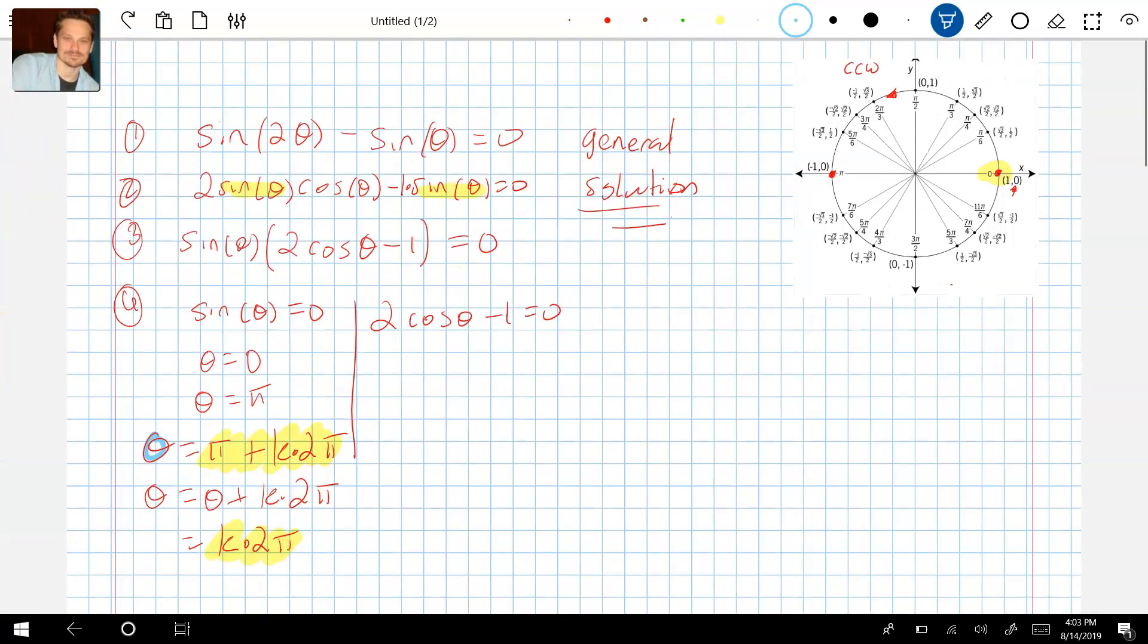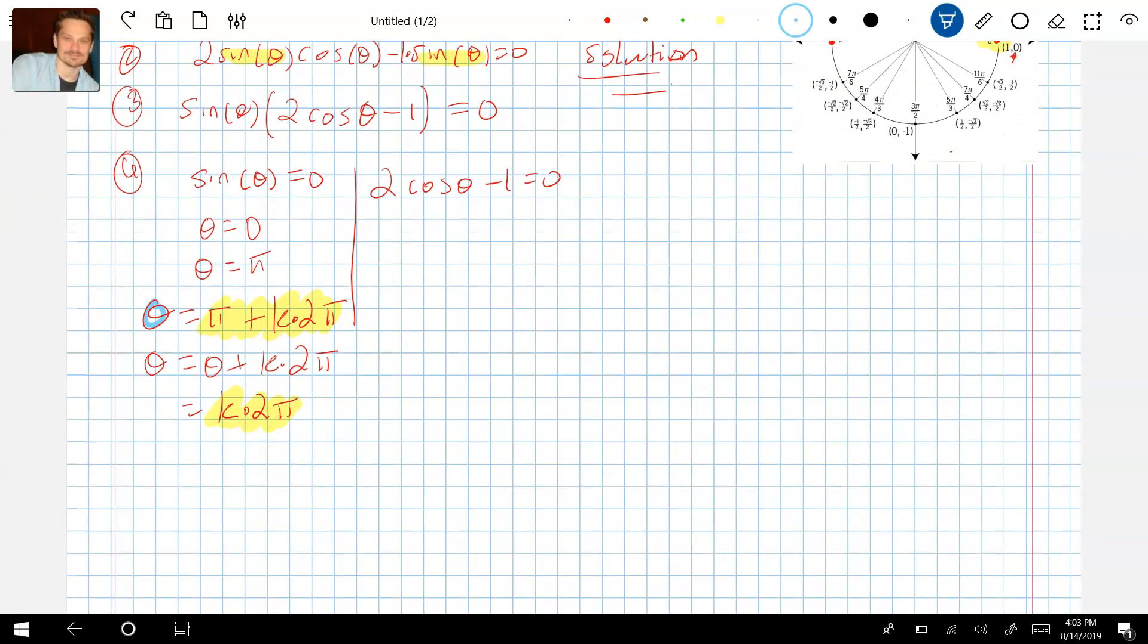That takes care of sin(θ) = 0. We now have to repeat this for 2cos(θ) - 1 = 0. So we do that by solving for cos(θ). Add 1, then divide by 2, so cos(θ) = 1/2. What this says in English is get the angles where the value of the x-coordinate is equal to 1/2. Remember, this is just fancy for the x-coordinate on the unit circle. So where the x-coordinate equals 1/2, get those angles.